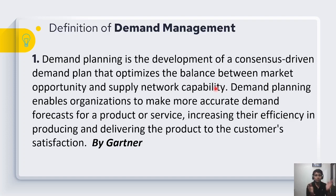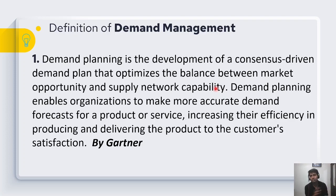In this situation, demand planning needs to prioritize which customers to give priority to, and how much allocation can be done for each customer based on strategy. These are the decisions taken by demand planning when supply cannot meet market demand. Let us now take the second example.